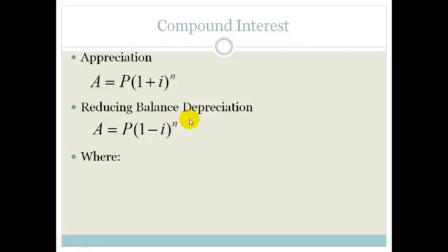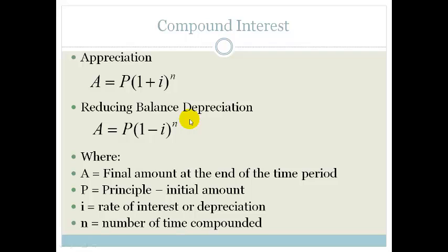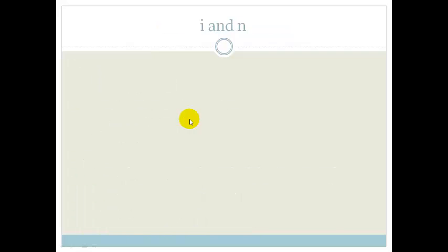And then, just to make sure you know and remember what this data stand for, your A is the final amount at the end of the time period. Your P is your principal, which is your initial amount. Your I is your rate of interest or depreciation. But, now, remember that in compound interest, a lot of times we don't just have for years. So, the N is the number of times compounded. So, let's just talk about this I and N. Let's do an example.